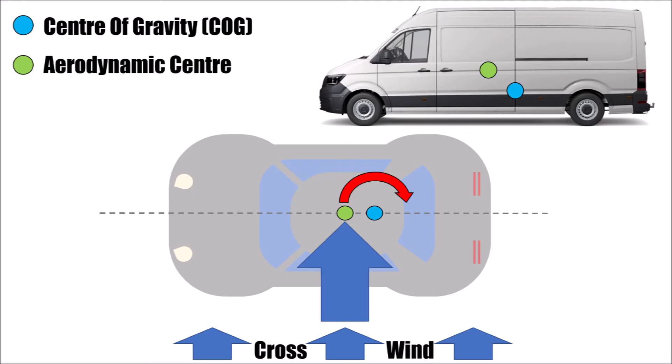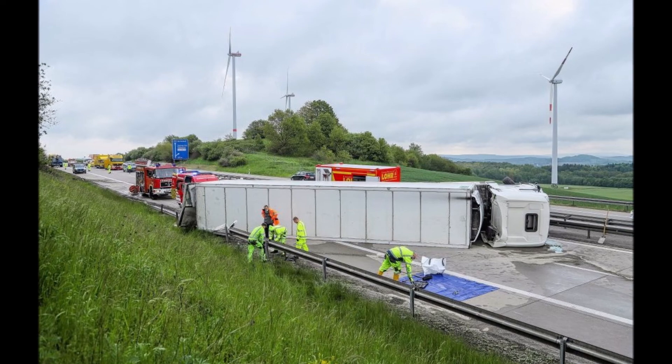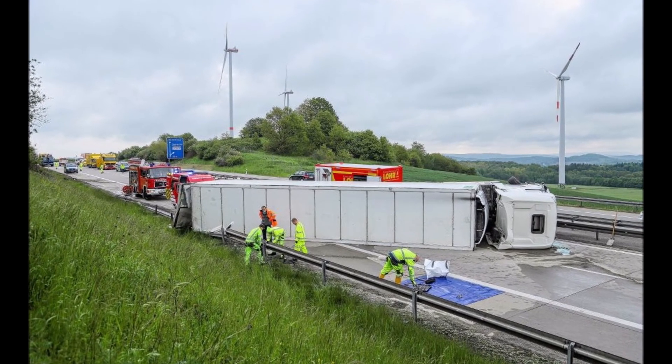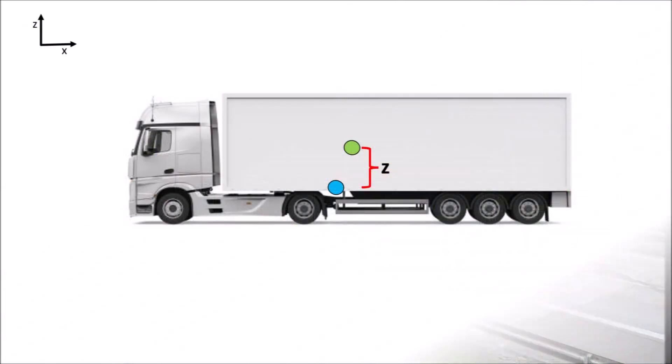As you might have noticed, there is also a distance in Z between both points, which can overturn a vehicle. That is a serious problem for trucks because the distance between the two points is usually quite big and hence the lever arm long. If this distance in Z is large enough, trucks can overturn at heavy winds. And as you know now, aerodynamic center stays at the same position and the COG is low when the truck is unloaded. So the highest risk of overturning aerodynamically is when the truck is unloaded.